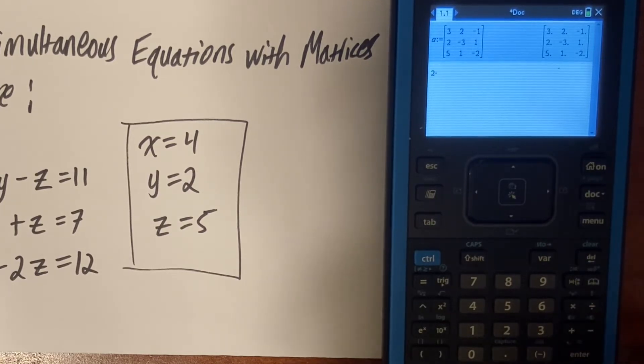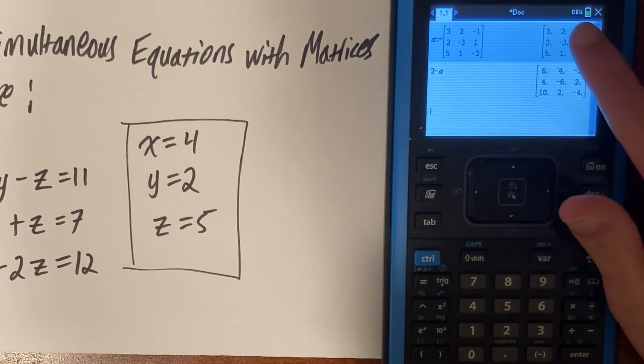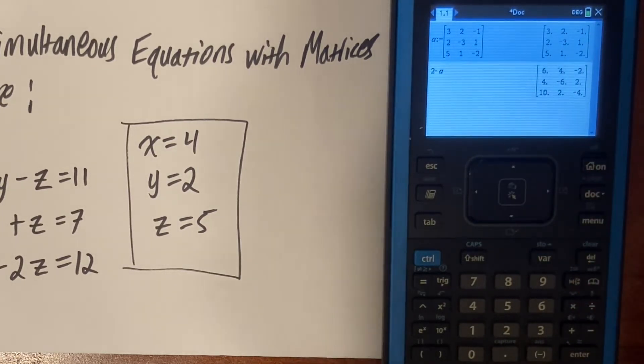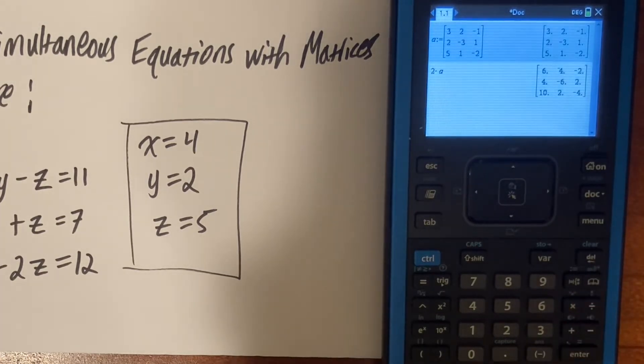Instead of typing the entire matrix, we can just type a, as seen here. We just did two times that entire matrix. So three became six, two became four, and so on.